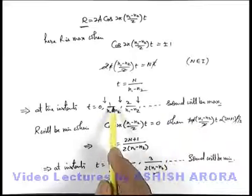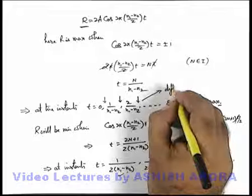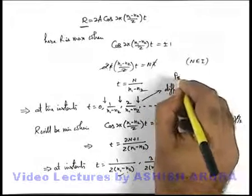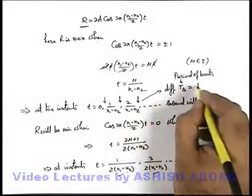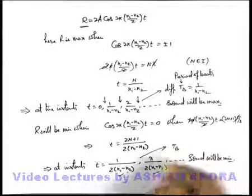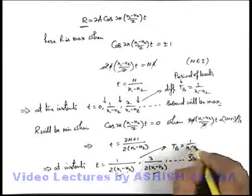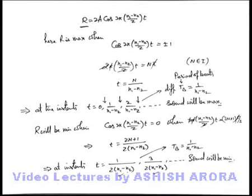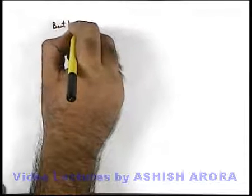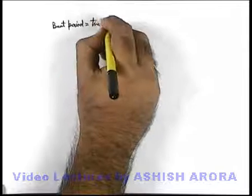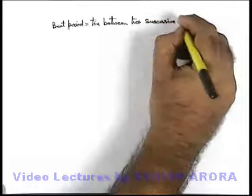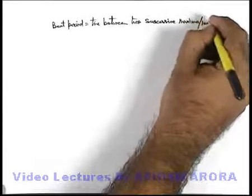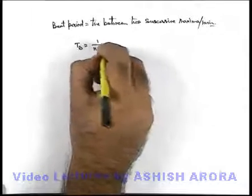Here we can also calculate the time difference between two maxima. The time period of beats — called the period of beats — can be calculated as the difference of two maxima, which is 1 by (n1 minus n2). Similarly, the difference of two minima is also the same: 1 by (n1 minus n2). The beat period is simply the time between two successive maxima or minima, which is 1 by (n1 minus n2).